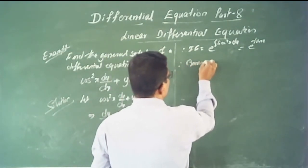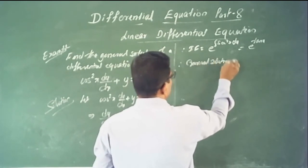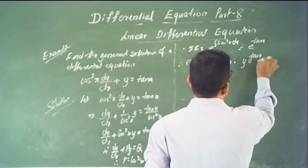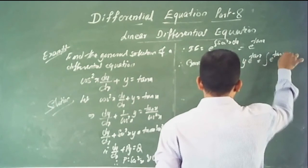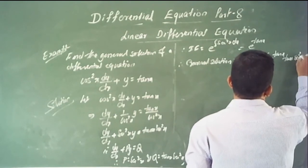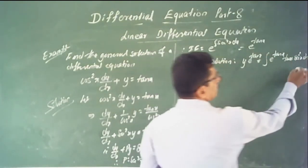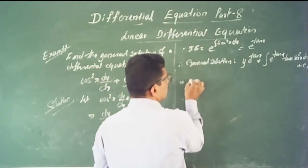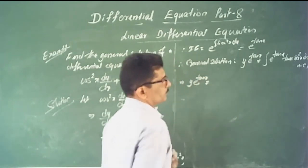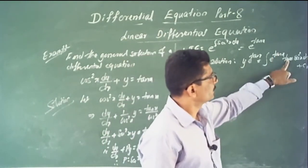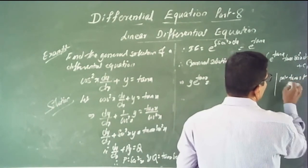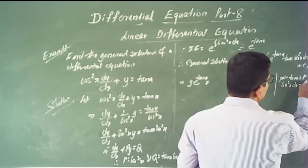The general solution is: y · e^(tan x) = ∫e^(tan x) · tan x · sec²x dx + C₁. To integrate the right-hand side, use substitution: let t = tan x, then sec²x dx = dt. So the integral becomes ∫e^t · t dt.